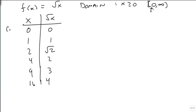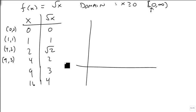So we get the points 0, 0, 1, 1, 4, 2, 9, 3. And that'll give us enough points. And so I also am not going to worry about graphing anything over here, because my first point's at 0, 0.